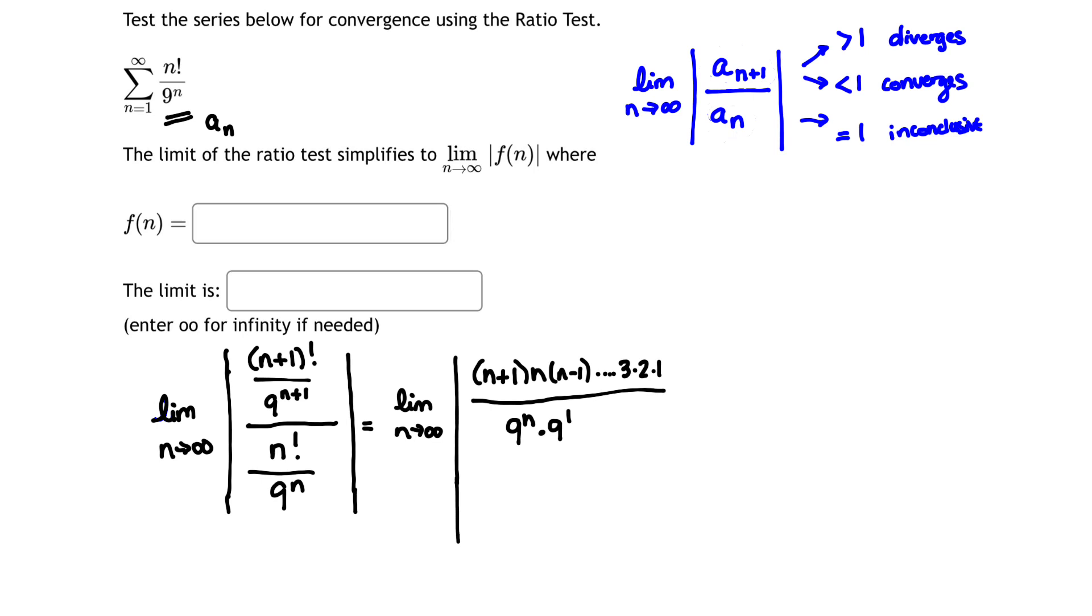Now I'm dividing by n factorial, and n factorial is n times n minus 1 times n minus 2, all the way down to 3, 2, 1. And 9 to the n is just 9 to the n. So far, so good.